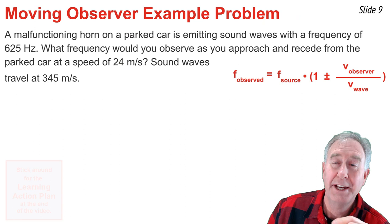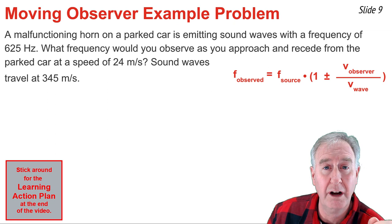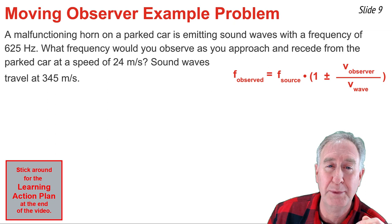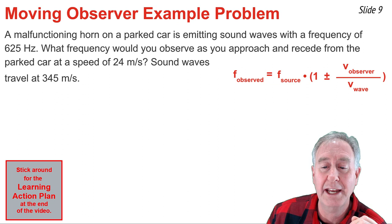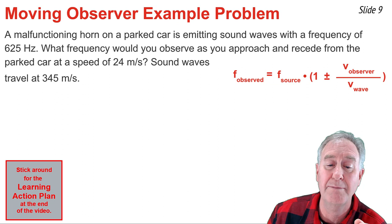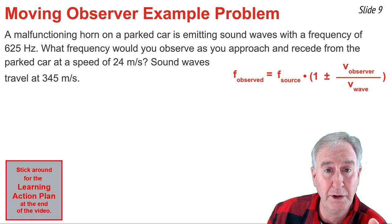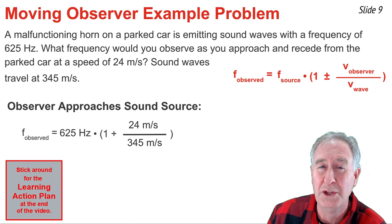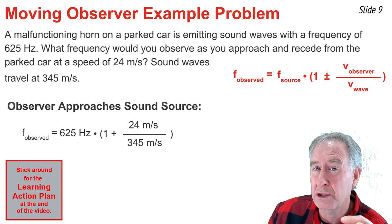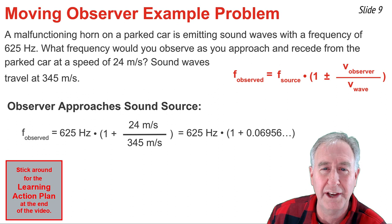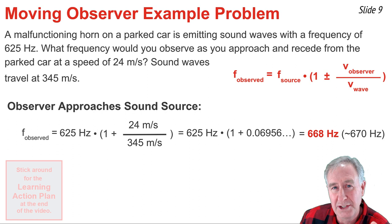Let's use this equation to solve a problem about a malfunctioning horn on a parked car. The observer is moving while the horn is the stationary source of waves producing sound at 625 hertz. The observer moves at 24 meters per second, and the speed of sound is 345 meters per second. To calculate the frequency observed as the observer approaches the horn, I place all numbers in the right spots and use the plus sign inside the parentheses. Evaluating and multiplying by 625 hertz, I get 668 hertz.